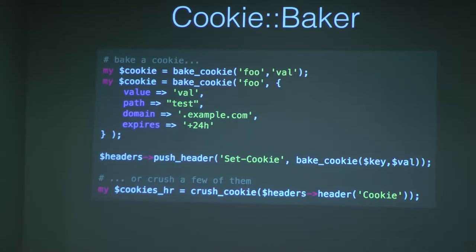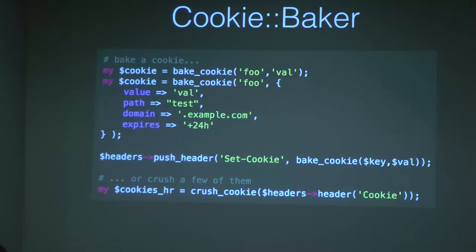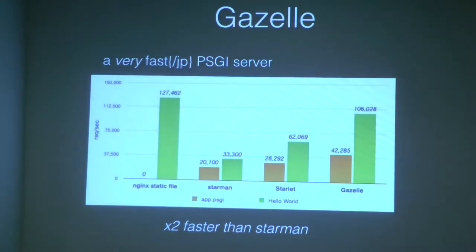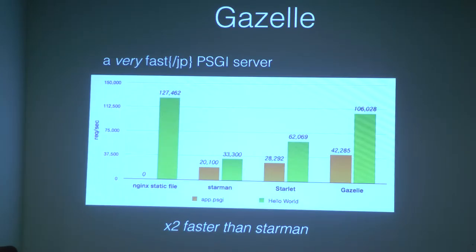Another module was Cookie::Baker. Do not use CGI.pm if you want to handle cookies — either do it yourself or use this one. It's a very easy way to build a cookie and display the string in your app. You can go both ways: create your cookie or read it. Our Gazelle is another PSGI server claiming to be extremely fast — they say two times faster than Starman. It really depends on your app, but it may be worth trying.